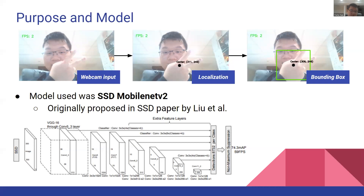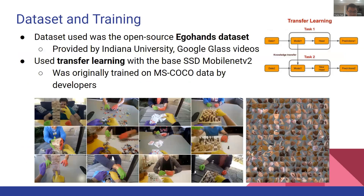This allows bounding boxes to be predicted at different scales along the network, making its accuracy competitive in relation to previous RCNN-based approaches, but with a much faster runtime.